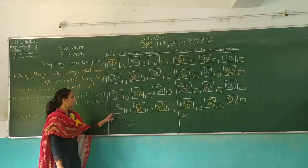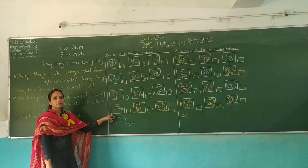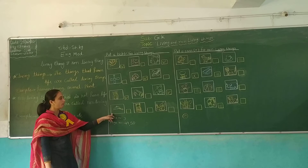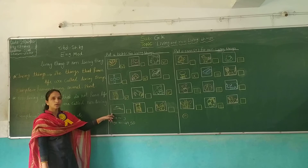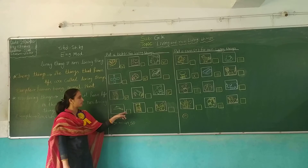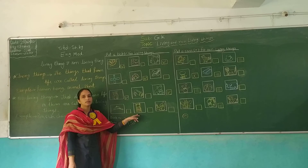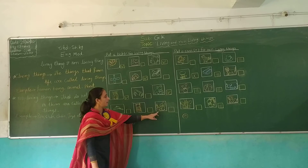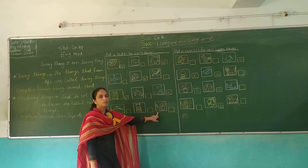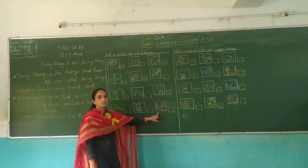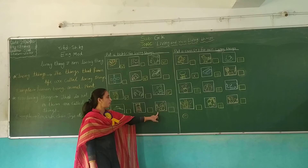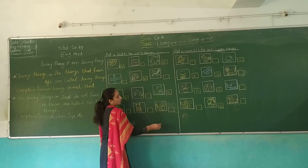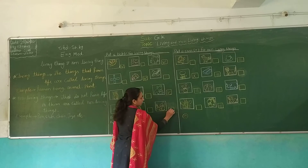And next, which picture is this? Cap. Cap is a non-living thing. Chair. Chair is a non-living thing. And which picture is this? Sparrow. Sparrow is a living thing.